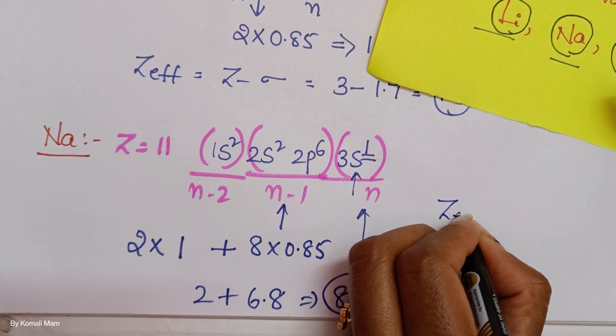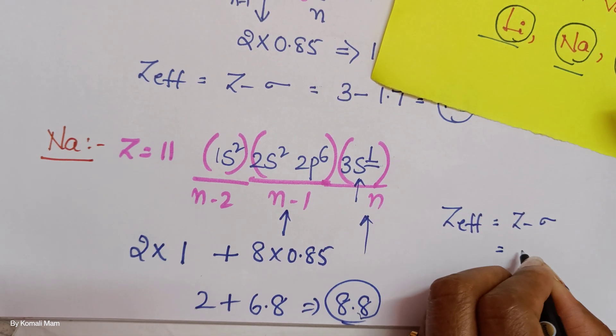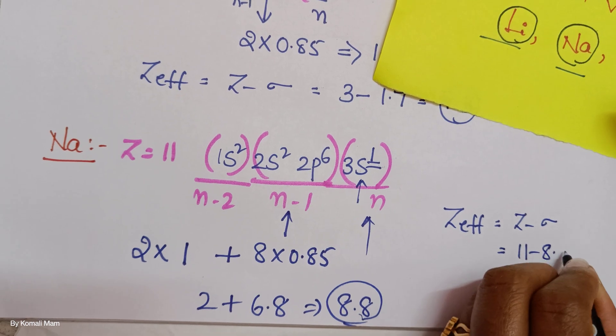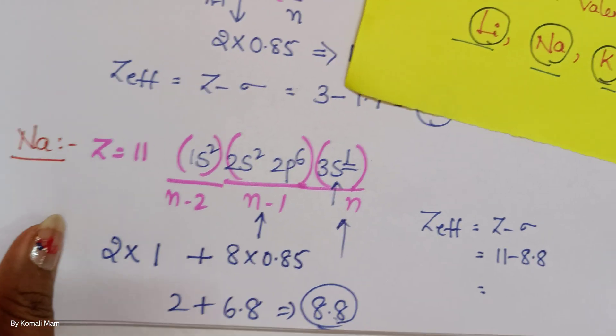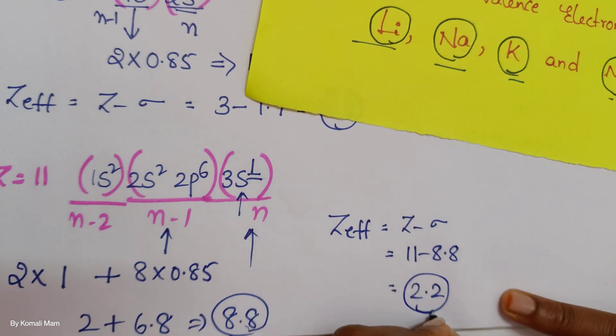Then 2 plus 8 into 0.85 we got before 6.8. Then it is 8.8. Then what is the effective nuclear charge formula? Atomic number minus sigma. So 11 minus 8.8. How much is it? Here 1.2 is left, here 1 is left. 2.2 is the value.